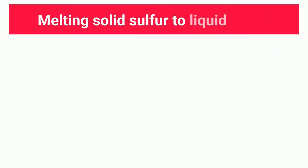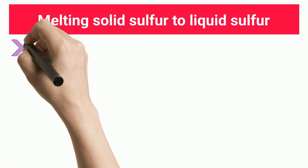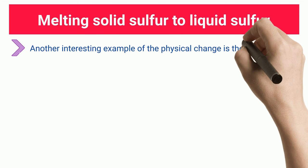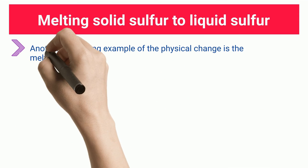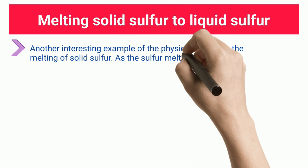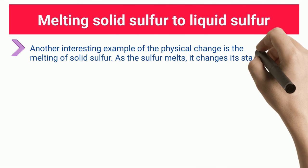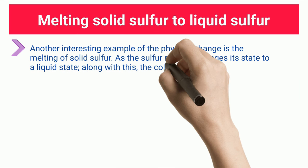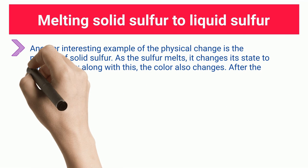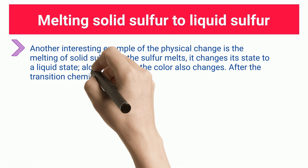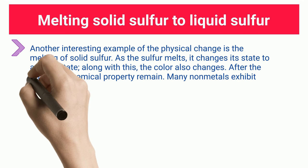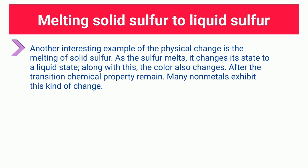Melting solid sulfur to liquid sulfur: another interesting example of physical change is the melting of solid sulfur. As sulfur melts, it changes its state to a liquid state, and along with this the color also changes. After the transition, the chemical properties remain the same. Many non-metals exhibit this kind of change.